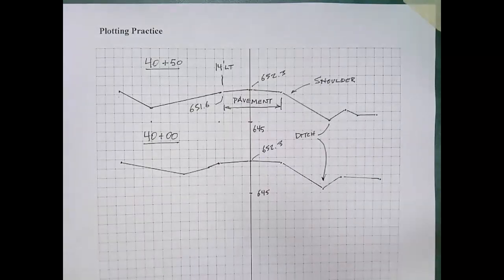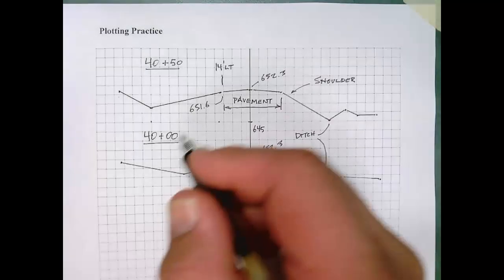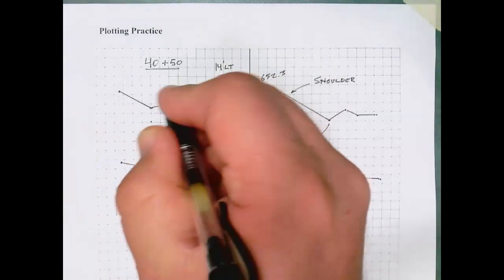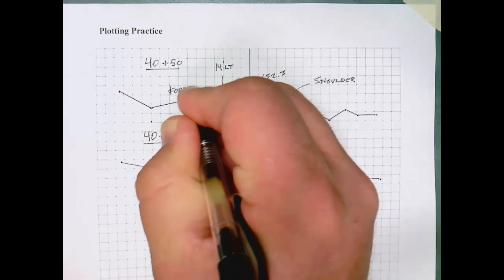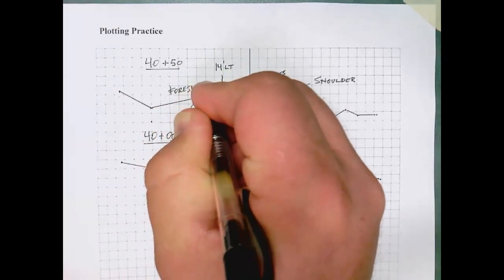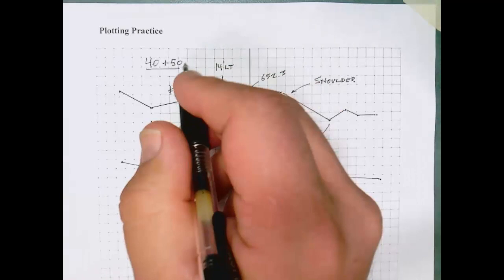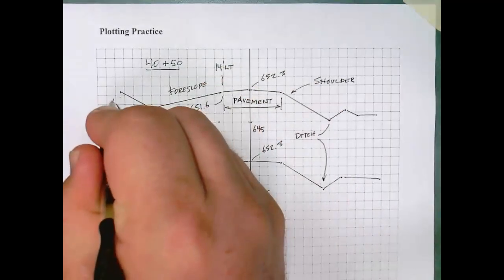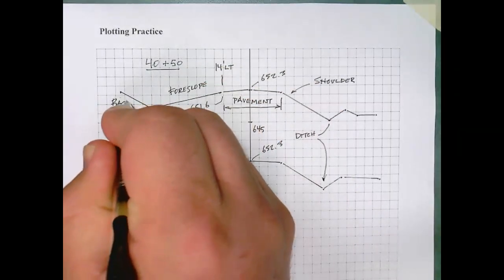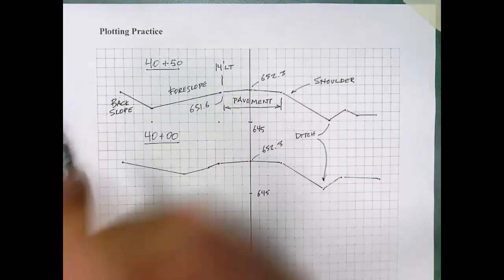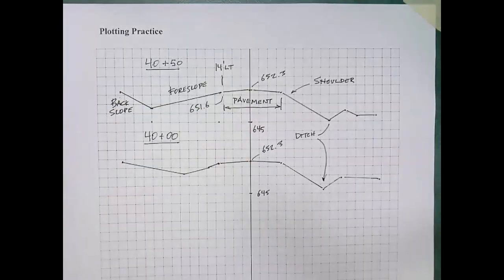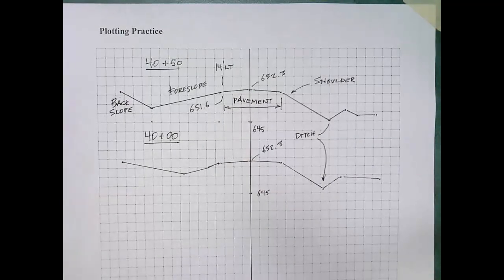The low point that you see on either side of the pavement here is the ditch. And the slopes on either side of the ditch have specific names. The one between the edge of pavement and the bottom of the ditch we call the foreslope, or sometimes the front slope. And then the one beyond the ditch, when you're standing on the pavement, is called the backslope.